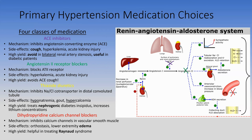Thiazide diuretics block the sodium-chloride co-transporter in the distal convoluted tubule. Side effects: hyponatremia (sodium loss), gout (increased uric acid reabsorption), and hypercalcemia—uniquely among diuretics, thiazides cause hypercalcemia via the sodium-calcium exchanger in the DCT, making them useful in osteoporosis but harmful with existing hypercalcemia. Thiazides treat nephrogenic diabetes insipidus and also increase lithium concentrations—consider them as a cause if a patient on lithium has supratherapeutic levels.